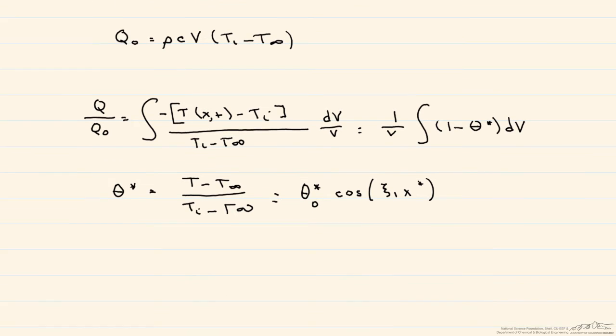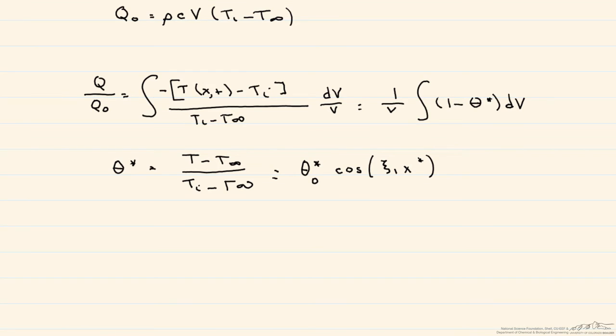So if we integrate this, we're left with Q over Q zero is equal to 1 minus now we have the sine of our eigenvalue divided by the eigenvalue itself times theta star sub 0.